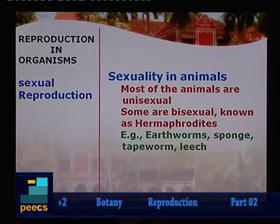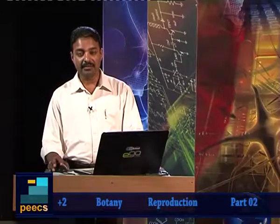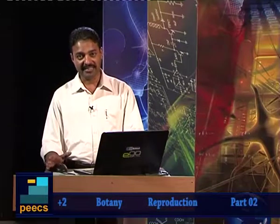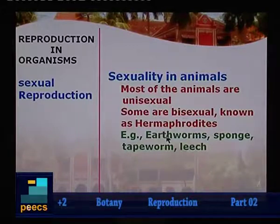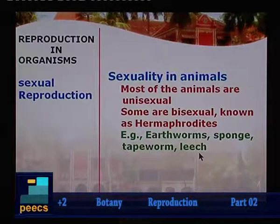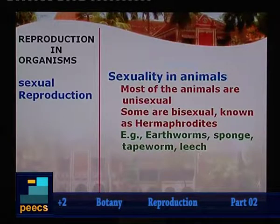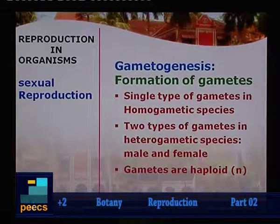In sexuality among animals, most animals are unisexual, whereas most plants are bisexual. Some animals are bisexual — examples include earthworm, sponge, tapeworm, and leech. Gametogenesis refers to the mode of formation of gametes. A single type of gamete is called homogametic species; two types — male and female — are called heterogametic species.